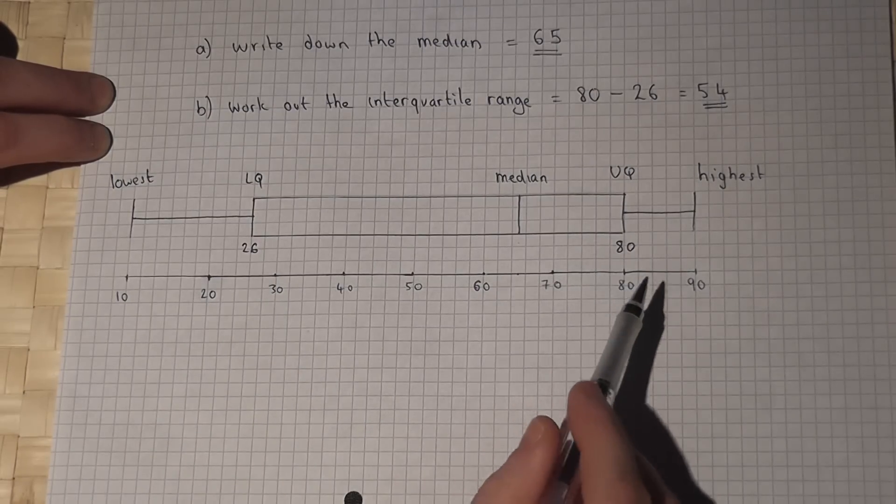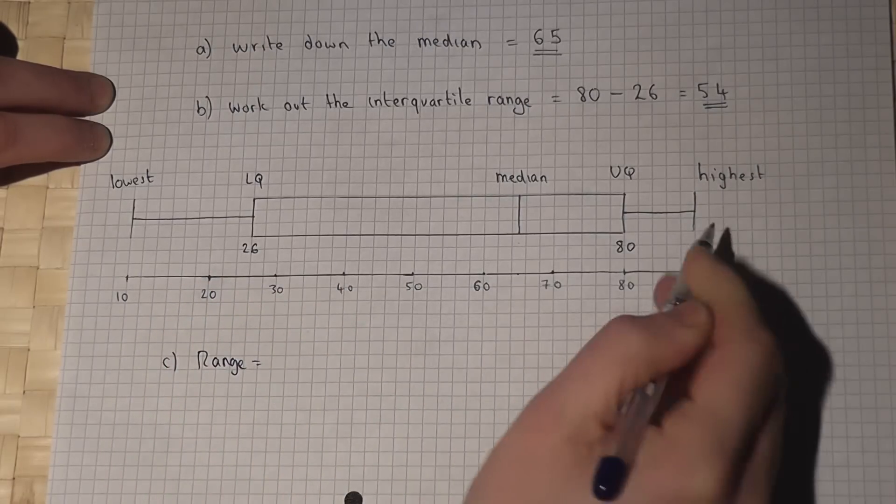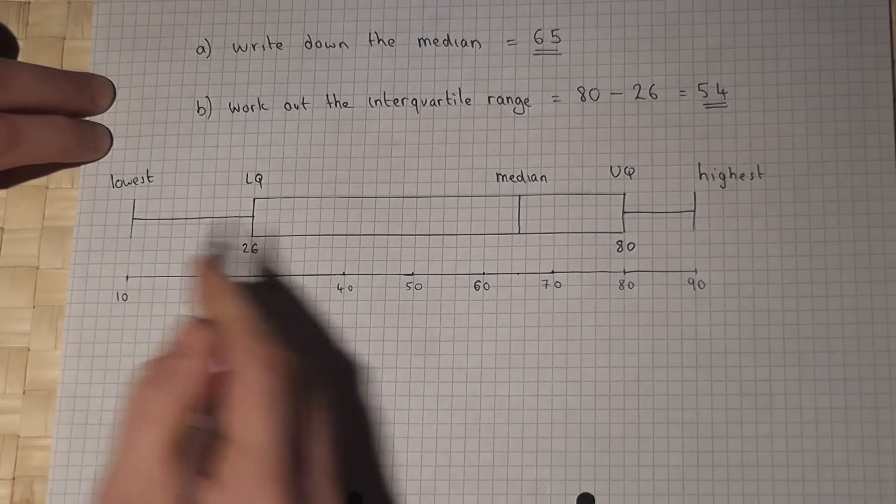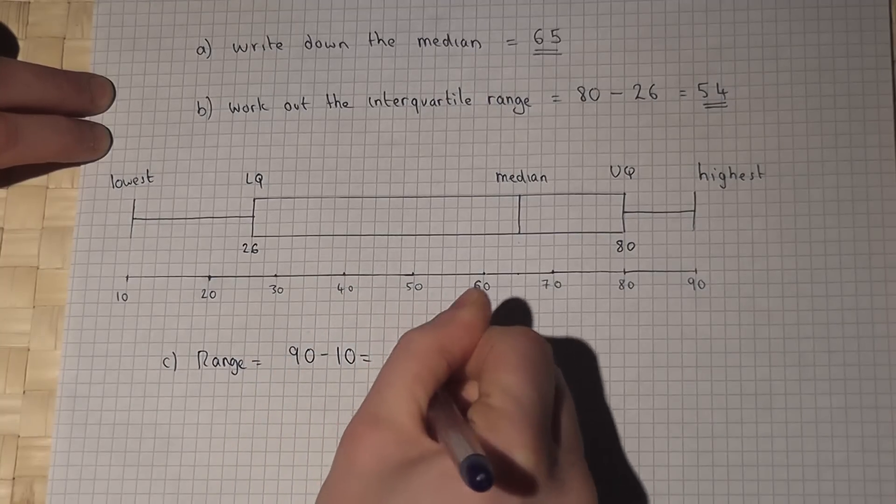The range, if you ask for that, is the highest take the lowest, which in this case is 90 take away 10, which is 80.